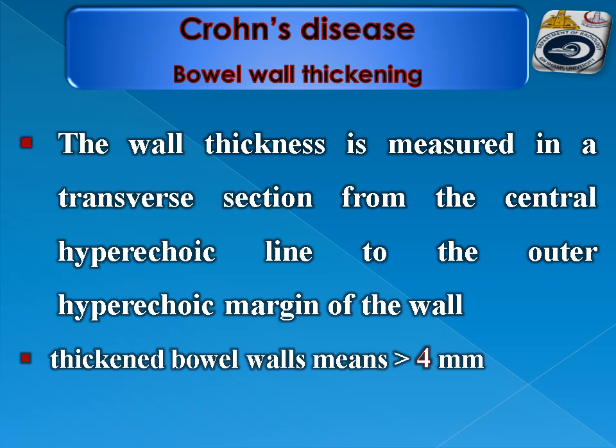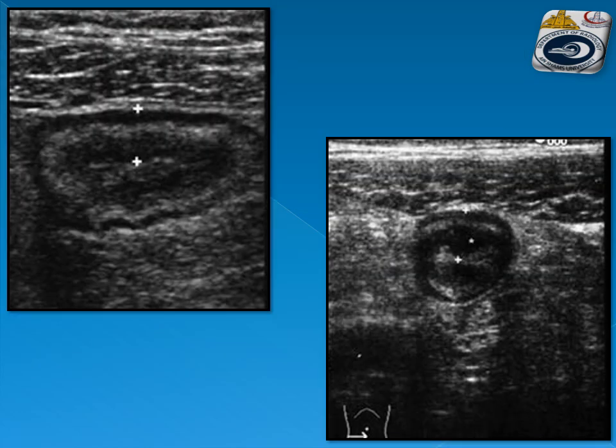Regarding bowel wall thickening: wall thickness is measured in a transverse section from the central hyperechoic line to the outer hyperechoic margin of the wall. Thickening of the bowel wall means more than 4 mm. It is more accurate to measure in transverse section. Examples show the measurements using calipers from the inner to outer hyperechoic line.